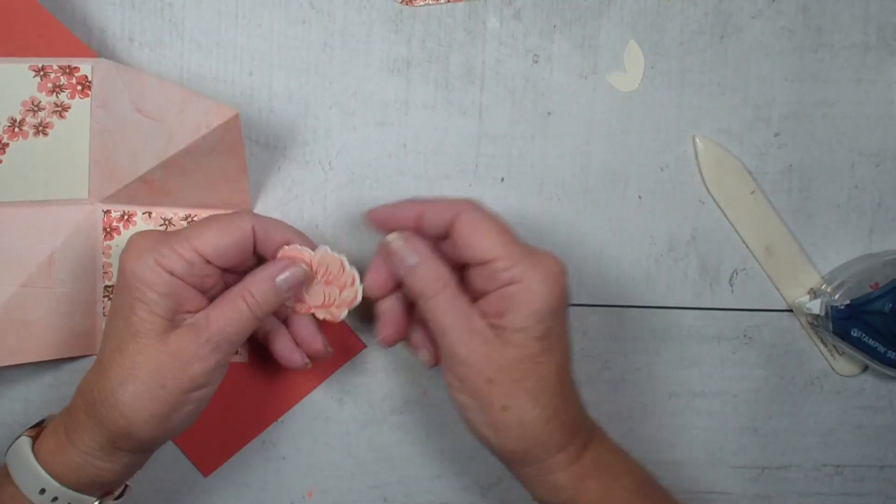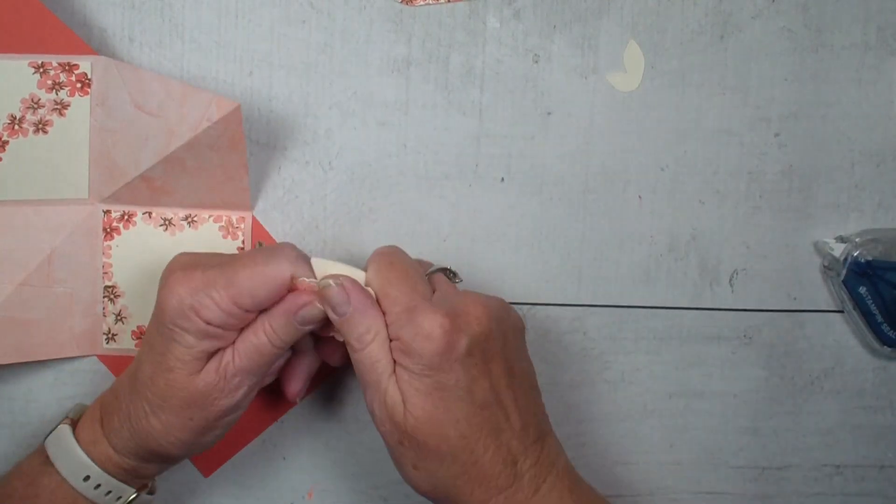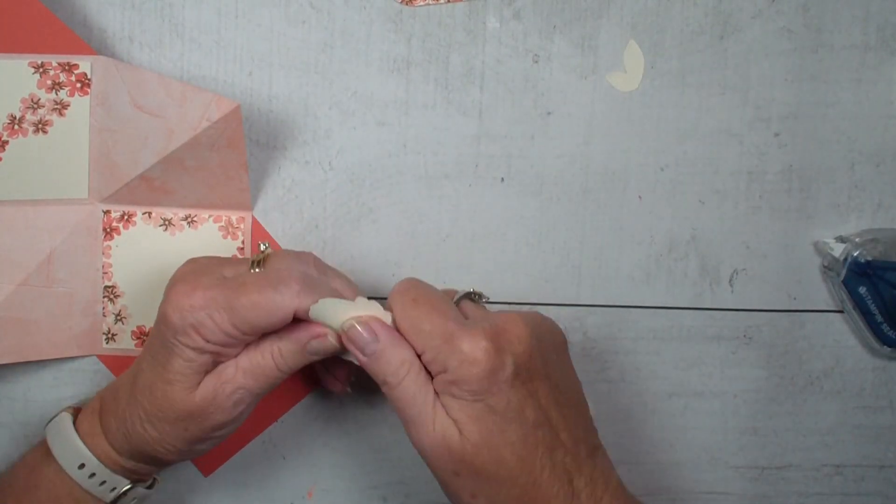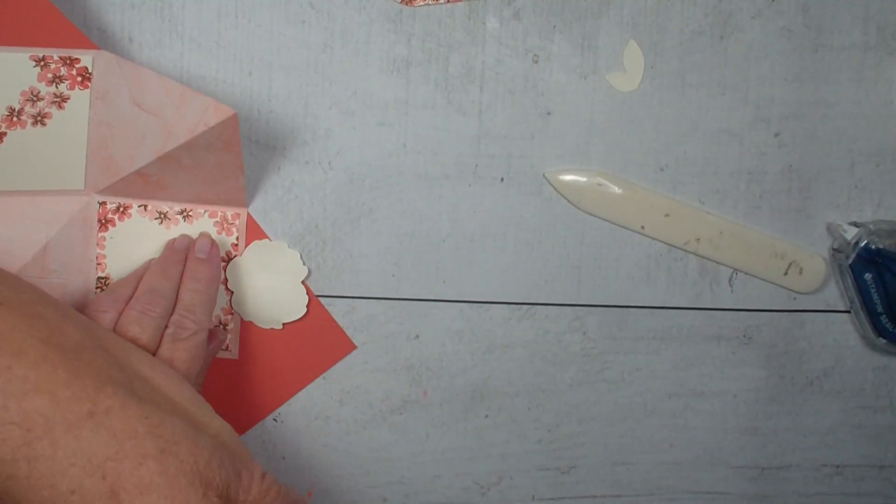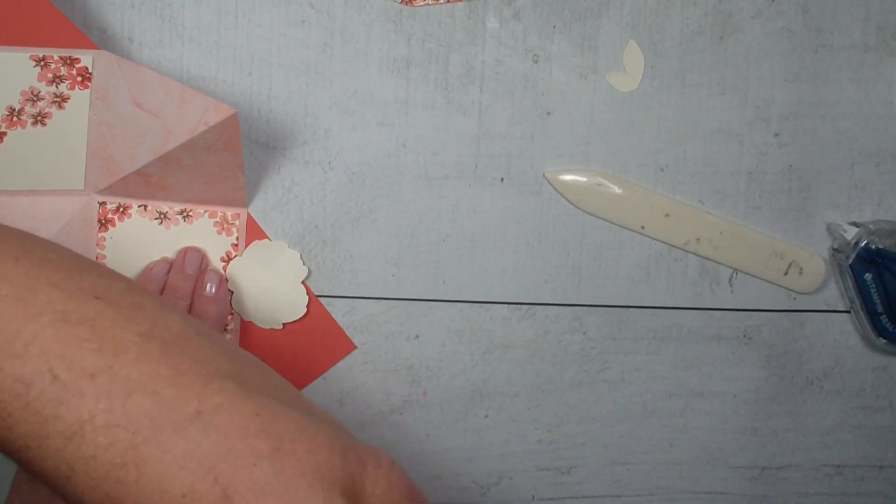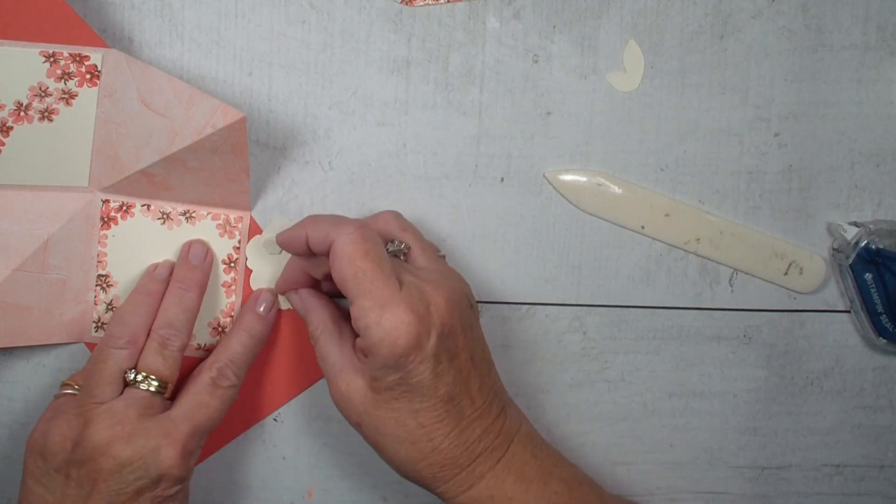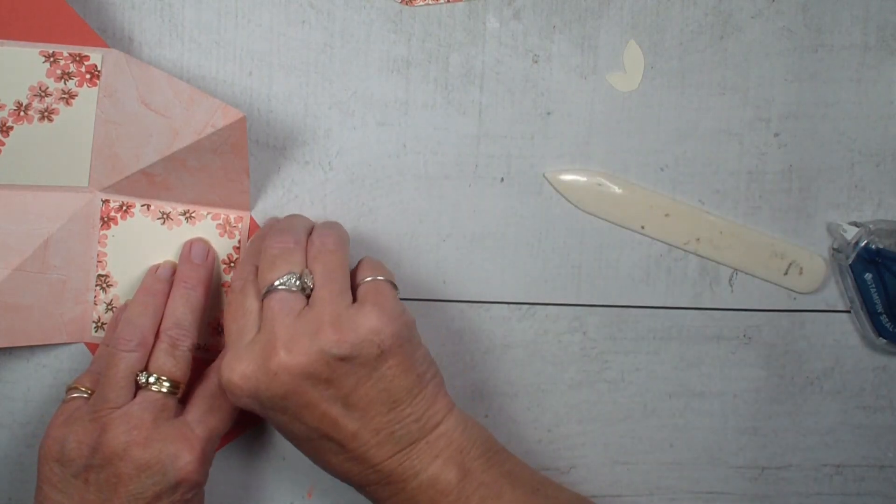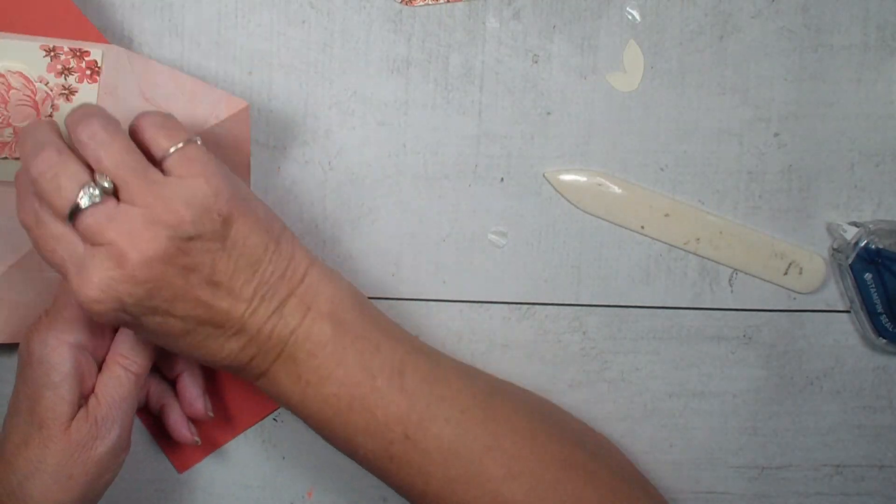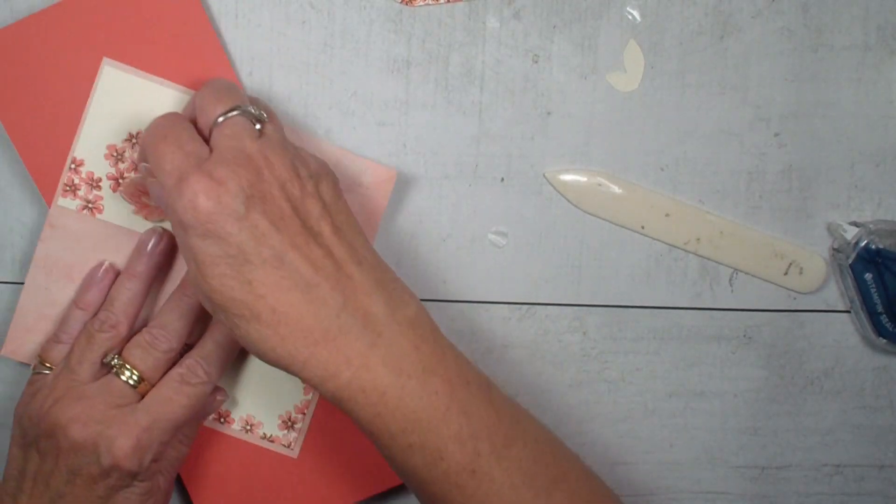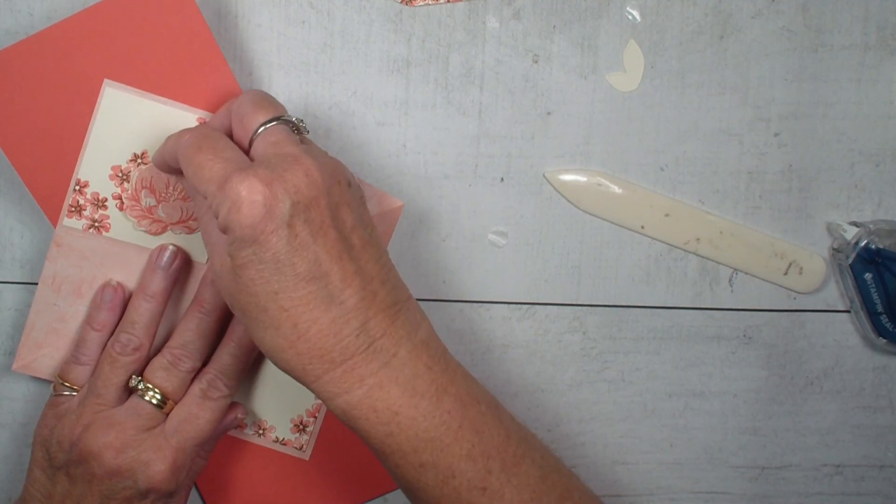Next what I'm going to do is grab my flower and kind of break those fibers on that. I'm going to grab some dimensionals and adhere that flower to the top part of my card like so. And I think I like that flower more down like this.